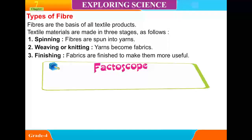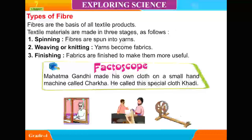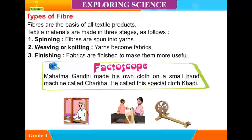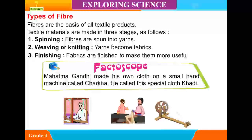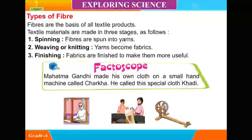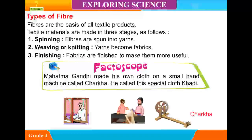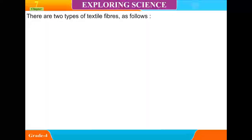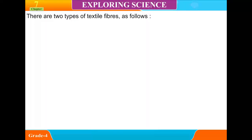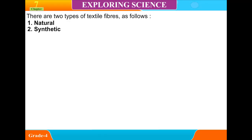Mahatma Gandhi made his own clothes on a small hand machine called a charkha. He called his special clothes khadi. There are two types of textile fibers: natural and synthetic.